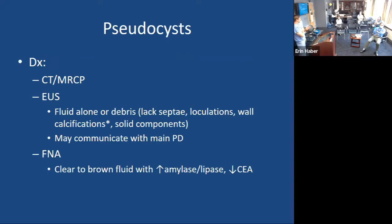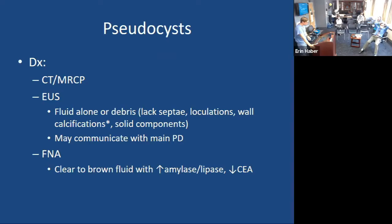Sometimes it's not as clear — pre-cancerous cystic lesions or even masses can lead to acute pancreatitis and fluid collections. In those situations, we'll perform EUS once the inflammation cools down to make sure there isn't another cause. Typically a pseudocyst is a solid uniloculated collection with a homogenous wall, without septations or loculations typical of pre-cancerous cysts. The fluid can be clear or muddy and bloody-looking. The amylase and lipase will be elevated because they're pancreatic secretions, and the CEA level will be low — CEA being a marker of mucin seen more with pre-cancerous cysts.